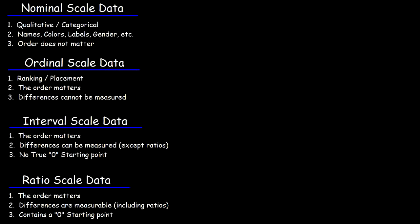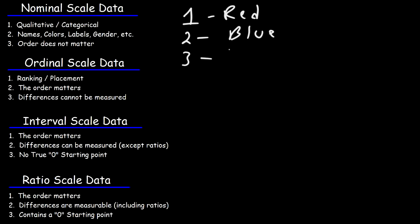So let's talk about the first one, the nominal scale data. This is a qualitative form of measurement. It's categorical, so it can include names, colors, labels, and things like that. For instance, we could assign a 1 to the color red, 2 to the color blue, and 3 to the color green.